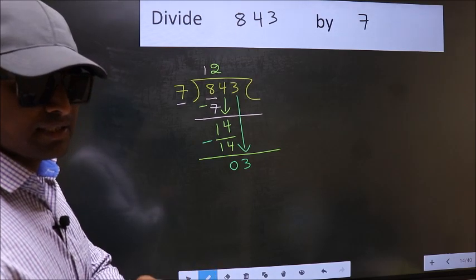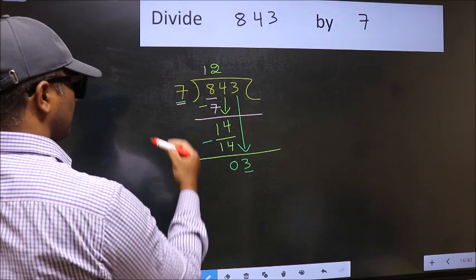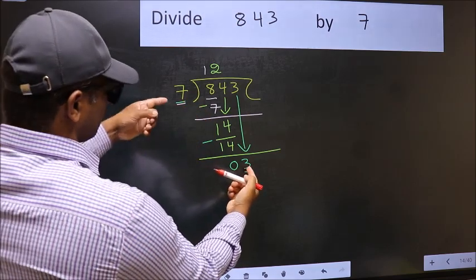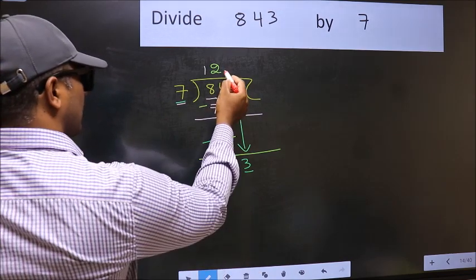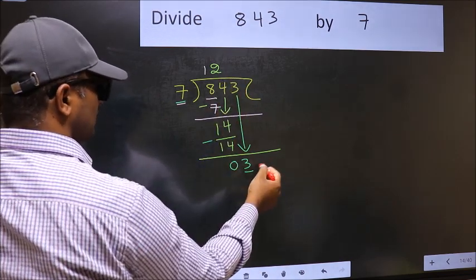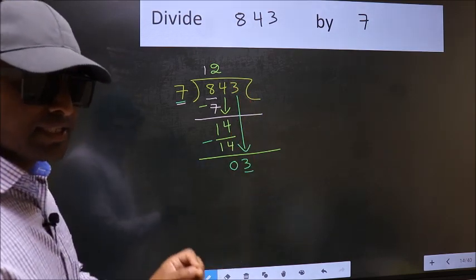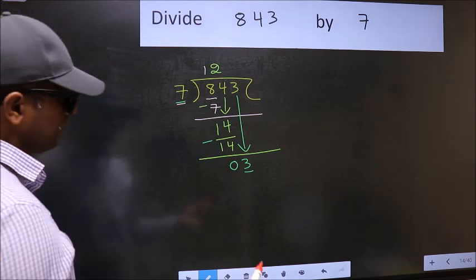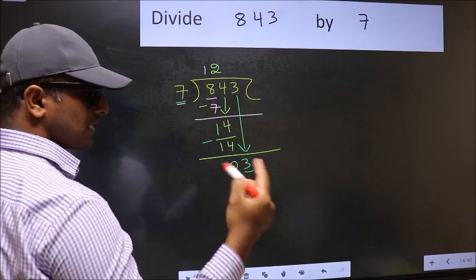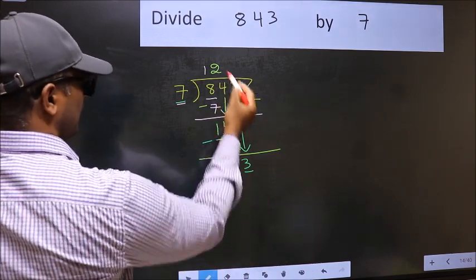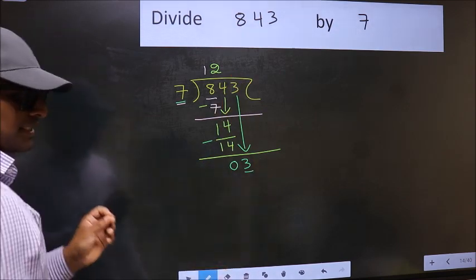And the mistake is this. Here we have 3 and here 7. 3 is smaller than 7. So what many do is, they directly put dot and take 0. Which is wrong. Why is it wrong? Because just now you brought this number down. And in the same step, you want to put dot and take 0. Which is wrong.